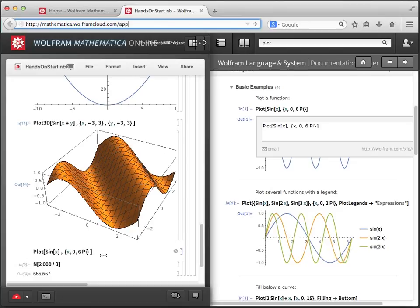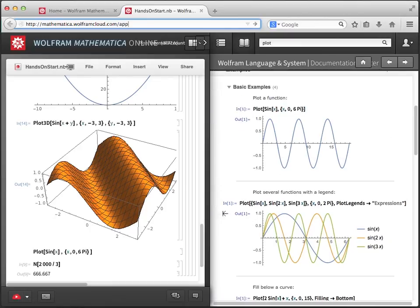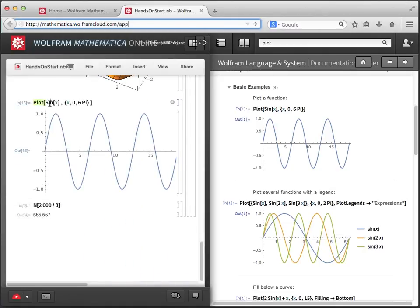So if I go to this first example, I can click on it and copy the text into my notebook. Then I can evaluate it as is, or make changes, like changing sign to cosine.